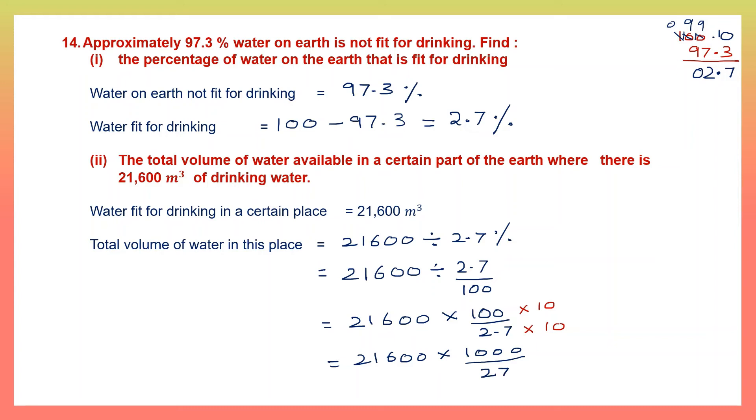So I get 21,600 into 1000 divided by 27. Let's divide 21,600 by 27. 27 into 8 is 216, so if I cancel this I get 800. Now when I multiply 800 into 1000, let's multiply 8 into 1. 8. Now count all the zeros: 1, 2, 3, 4, 5. Five zeros.